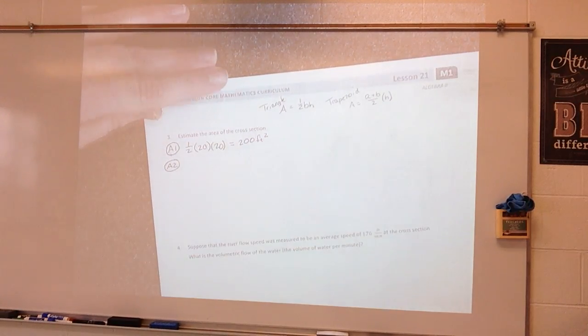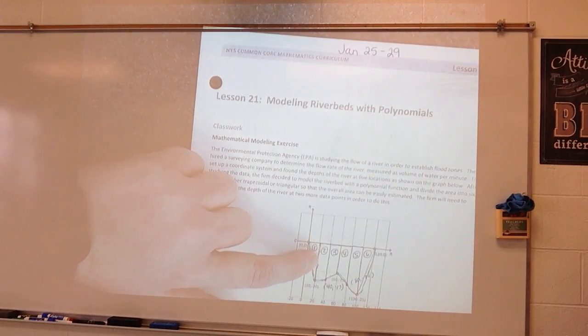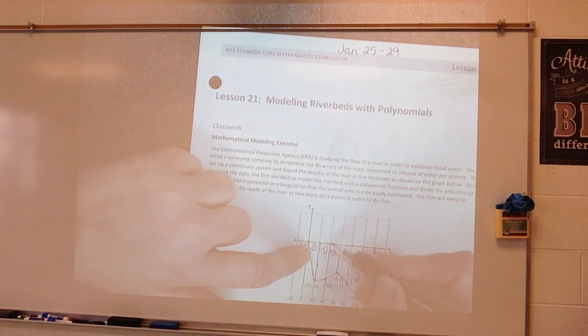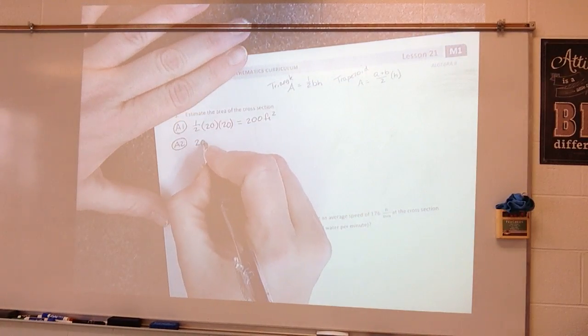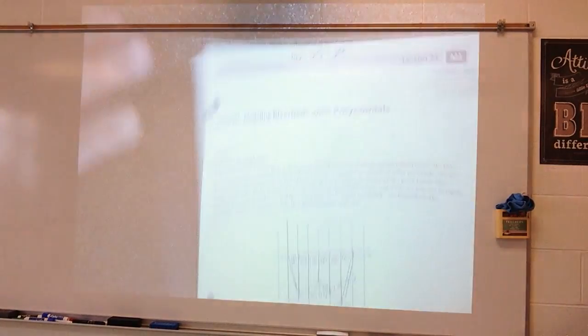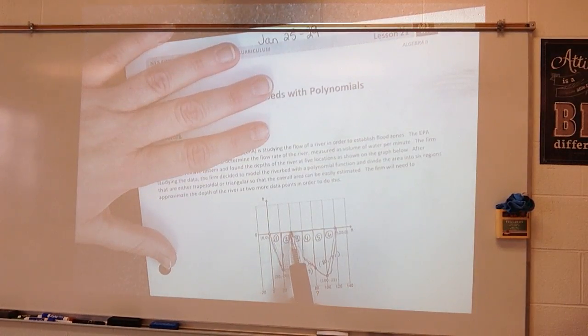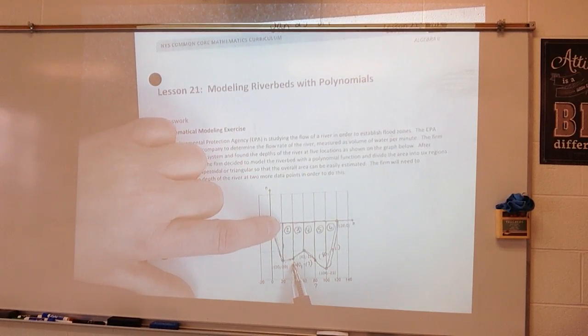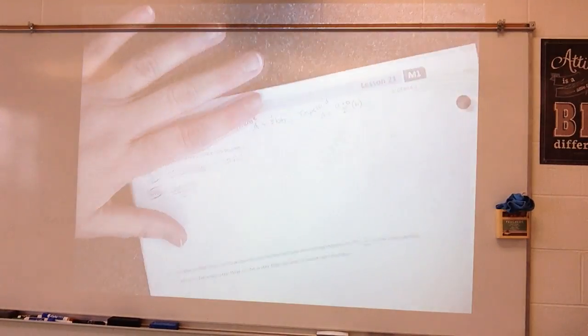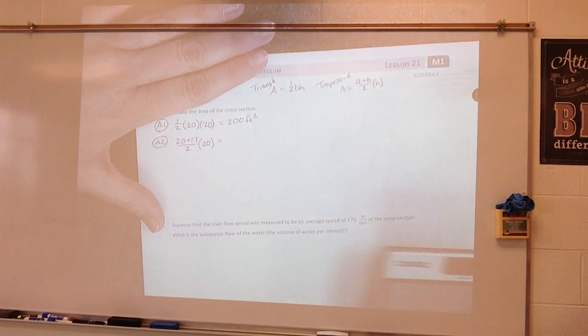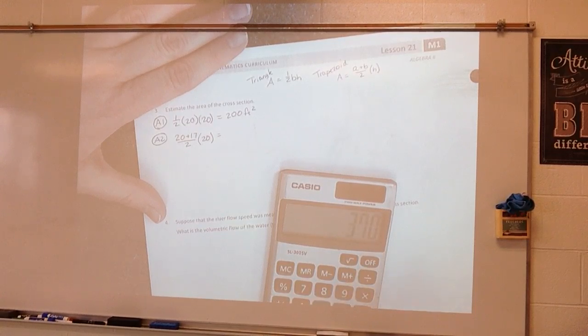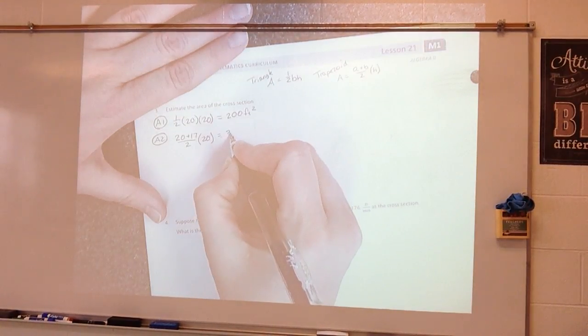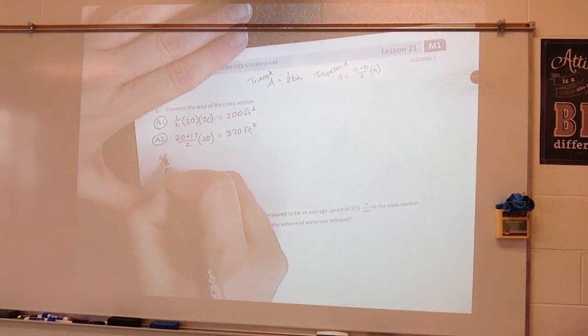We're going to find the area of 2. 2 is a trapezoid. A and B are my sides. So I've got one side that's 20 and one side that's 17. So I have 20 plus 17 divided by 2. And then my height, I'm going to use this right here. So it is 20 to 40. So that would be 20. So you can pull out the calculator really quickly and do 20 plus 17. Divide that by 2. And then multiply that times 20. And that gives us 370 square feet.